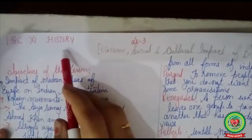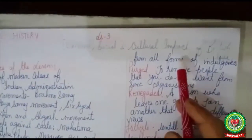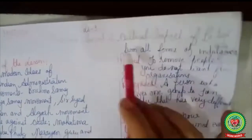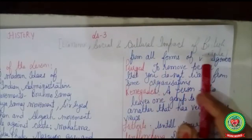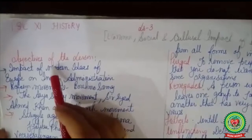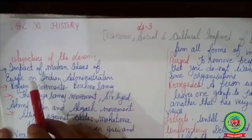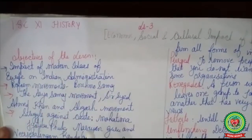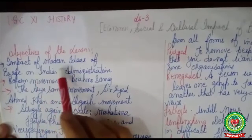Welcome to ISE plus one class. Today we will continue lesson three: Economic, Social and Cultural Impact of British Rule. Before going through the lesson, we will understand the objectives of the lesson. The objectives are to understand the impact of modern ideas of Europe on Indian Administration.